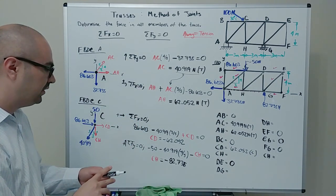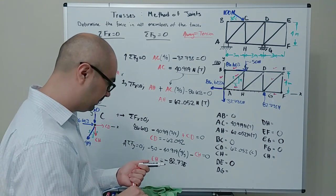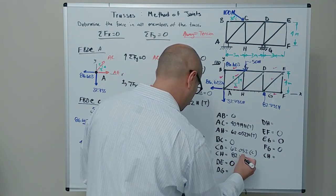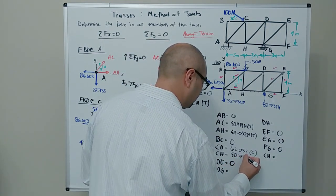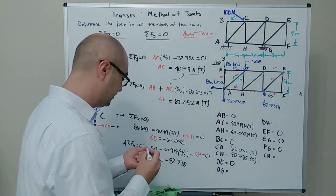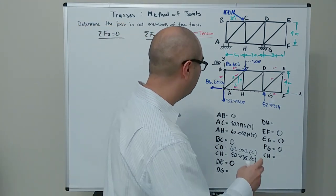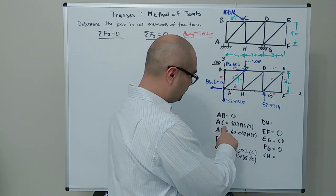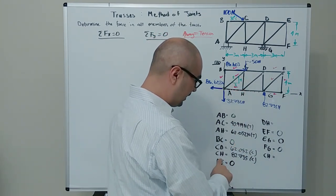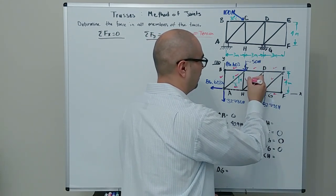A quick clarification: when summing forces, we simply follow where the arrows point on the free body diagram — up is positive, down is negative for Fy; right is positive, left is negative for Fx. The tension/compression convention only tells us the assumed direction; the sign of the result tells us if we guessed correctly.